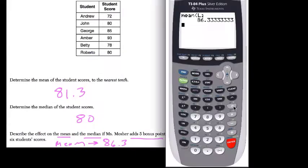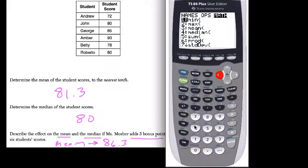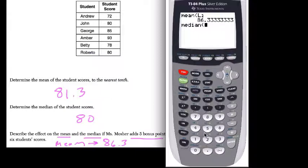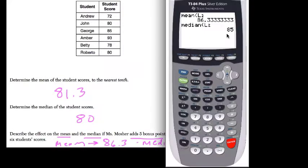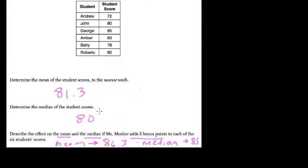And let's see what happens with the median. So we hit second, stat, math, choice four for median, and second two for list two. And that also has gone up five values. If the median is no longer 80, it's now 85. Essentially both have shifted up exactly five places. And this makes sense if you think about the way mean and median work.